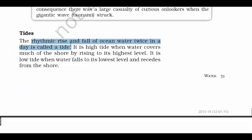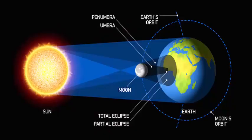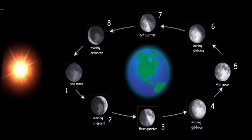Tides can be high tides or low tides. The usual reason behind tides is the strong gravitational pull exerted by the sun and the moon on the earth's surface. During the new moon — that is Amavasya — the sun, the moon and the earth are in the same line and the tides are highest; these are called spring tides. When the moon is at its third or seventh phase, which is the half moon day, the moon is at a 90-degree angle relative to the earth and sun, so the gravitational force of the moon pulls the ocean water diagonally, resulting in low tides.